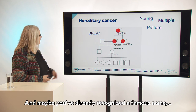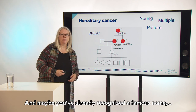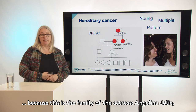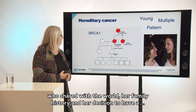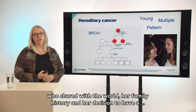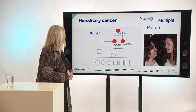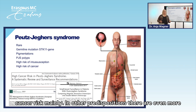And maybe you already recognized a famous name, because this is the family of the actress Angelina Jolie, who shared with the world her family history and her decision to have a prophylactic mastectomy and ovarectomy. In BRCA carriers there is a combination of breast and ovary cancer risk mainly.